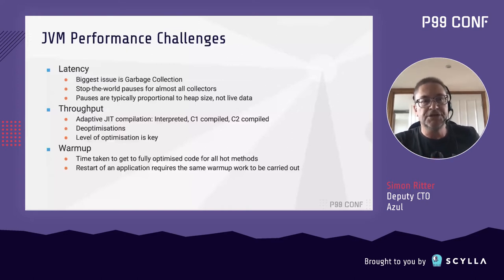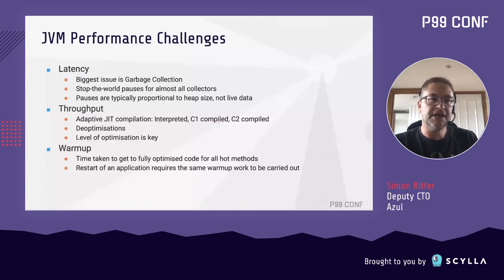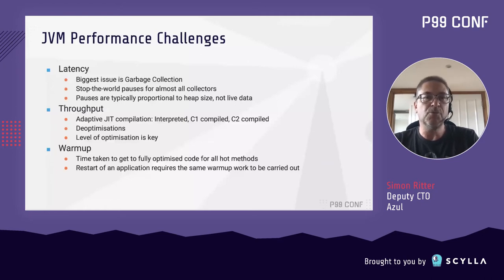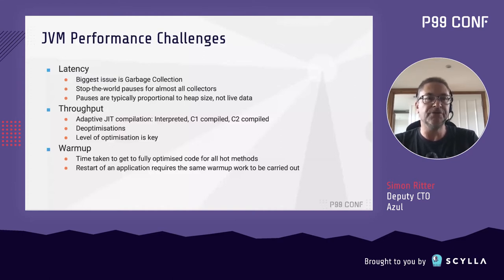The second aspect is throughput. This is where we see the fact that Java uses a virtual machine and needs to take bytecodes and convert them into native instructions. That can be done in a number of different ways — you can use interpretive mode where it's just directly translating bytecodes into instructions, or you can use JIT compilation with either a fast compiler or a heavily optimizing compiler. How much optimization happens there is the key to how much performance you're going to get. We'll talk a little bit more about de-optimizations, where you make an assumption about how to optimize code, perhaps get that wrong, and need to throw away the code and start again.